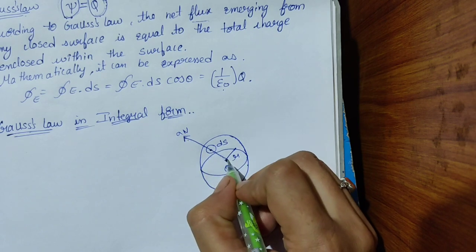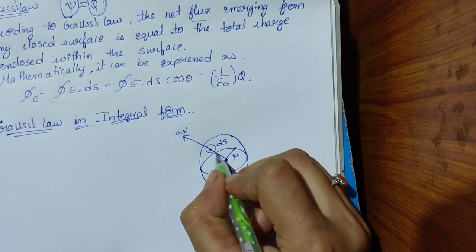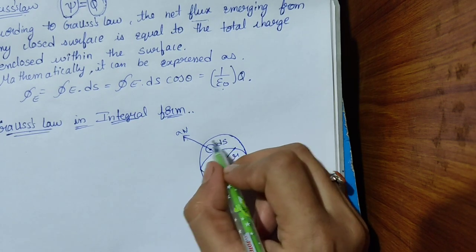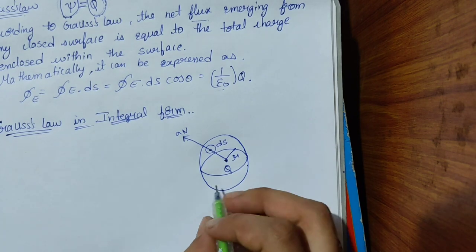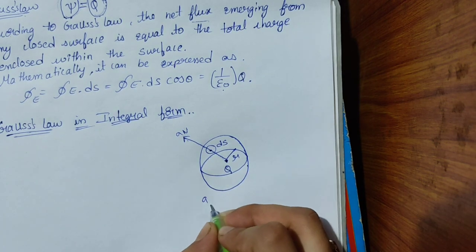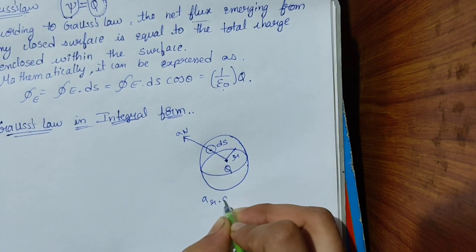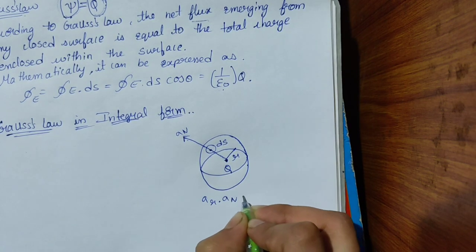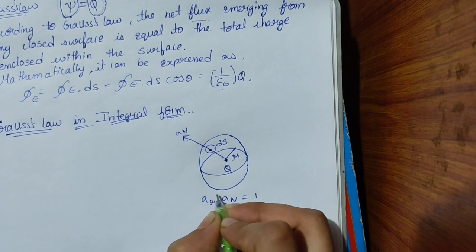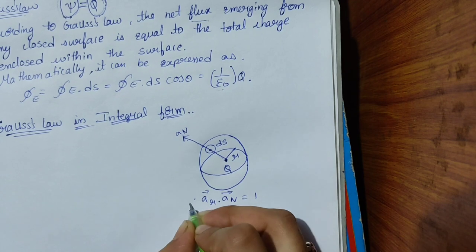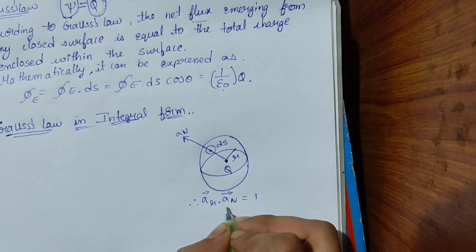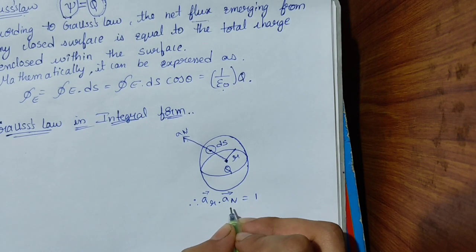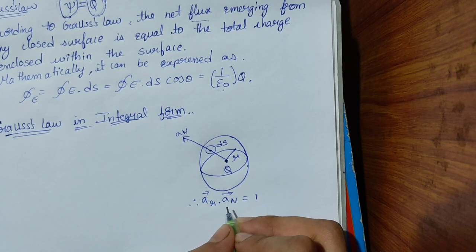Let â_n be the unit vector passing through this differential surface area in the direction normal to the surface of the sphere. So we can write â_r · â_n = 1, and we are going to use this in our derivation.